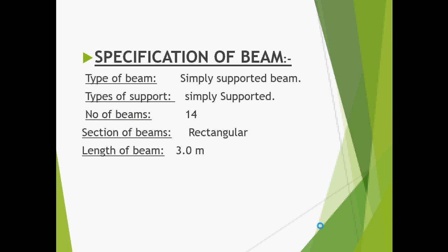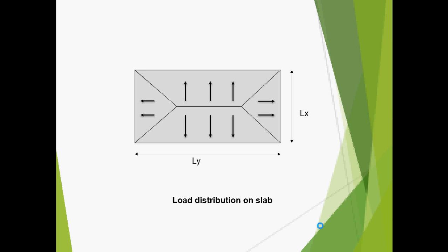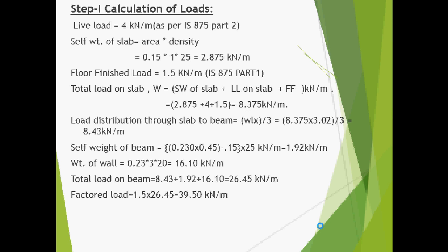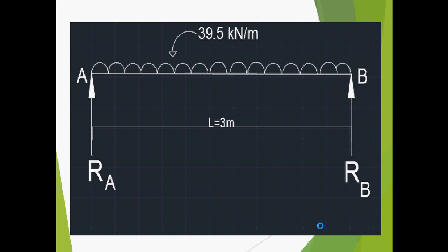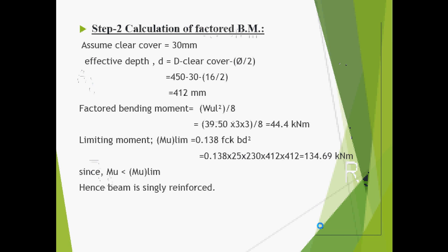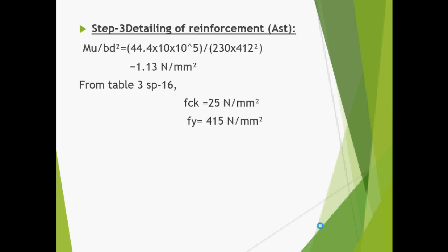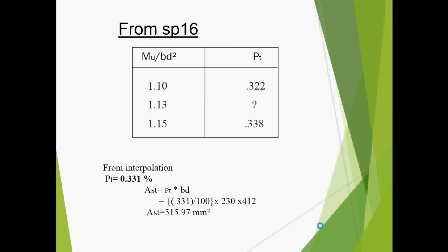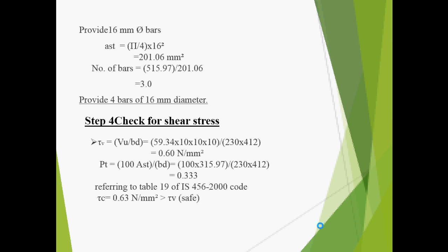Coming to the design of the beam — these are the specifications and materials used for the beam. We have a long span Ly and a short span Lx. On the Ly portion, trapezoidal load distribution was obtained, and on Lx, triangular load distribution. Loads were calculated accordingly. Uniform distributed loading of 39.5 kN/m was applied and reactions Ra and Rb were calculated. The factored bending moment was calculated and the beam was found to be singly reinforced. From interpolation, the area or percentage of steel was found to be 0.331 percent, and it was checked for shear stress which came out safe.